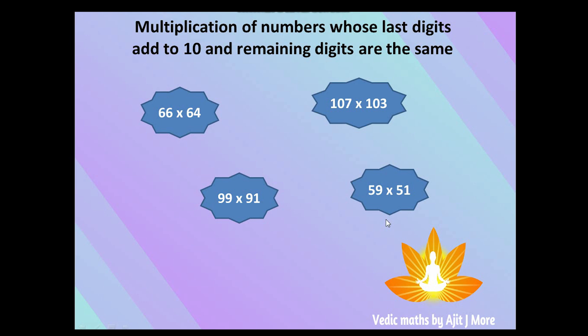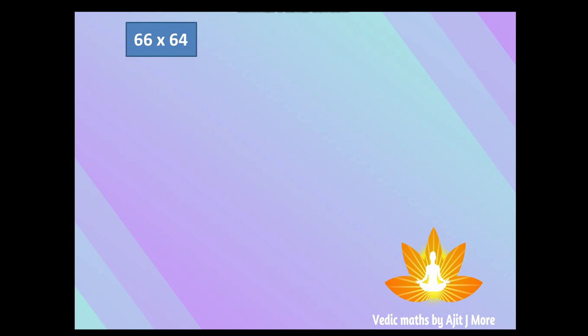I hope you are getting it. This will also be solved using a specific technique because the number combinations are restricted. Now let's see how to find such multiplication using the Vedic trick. Taking 66 × 64 as an example — always remember, here also the answer will have two parts. The first part is according to the sutra: one more than the previous. What comes before the unit place? The unit digits are 6 and 4, but what comes before them? That is 6.